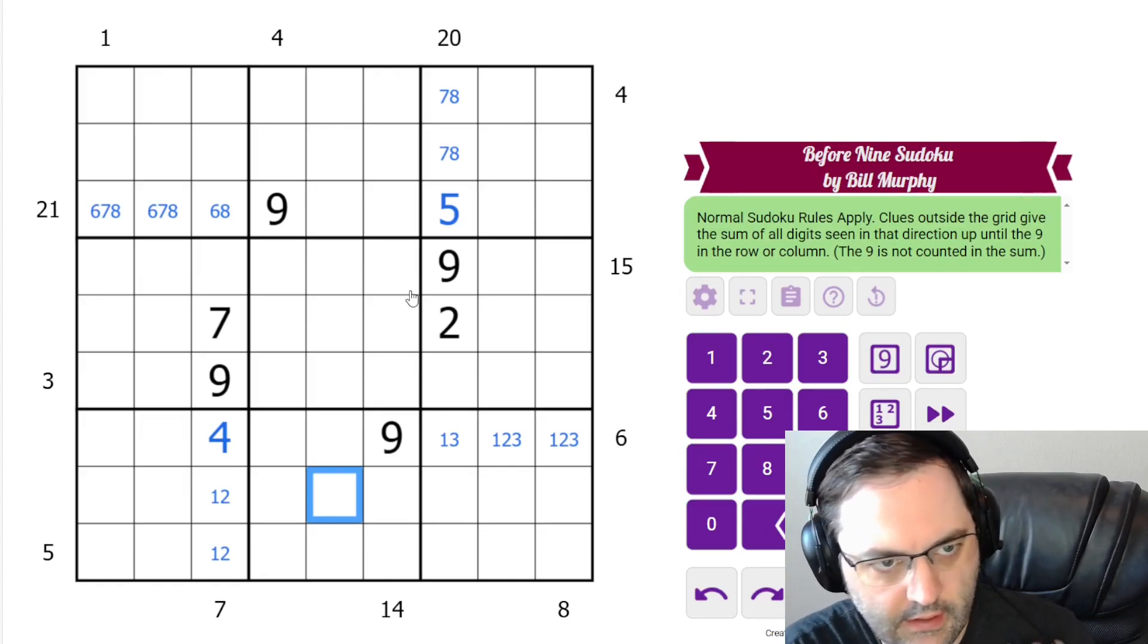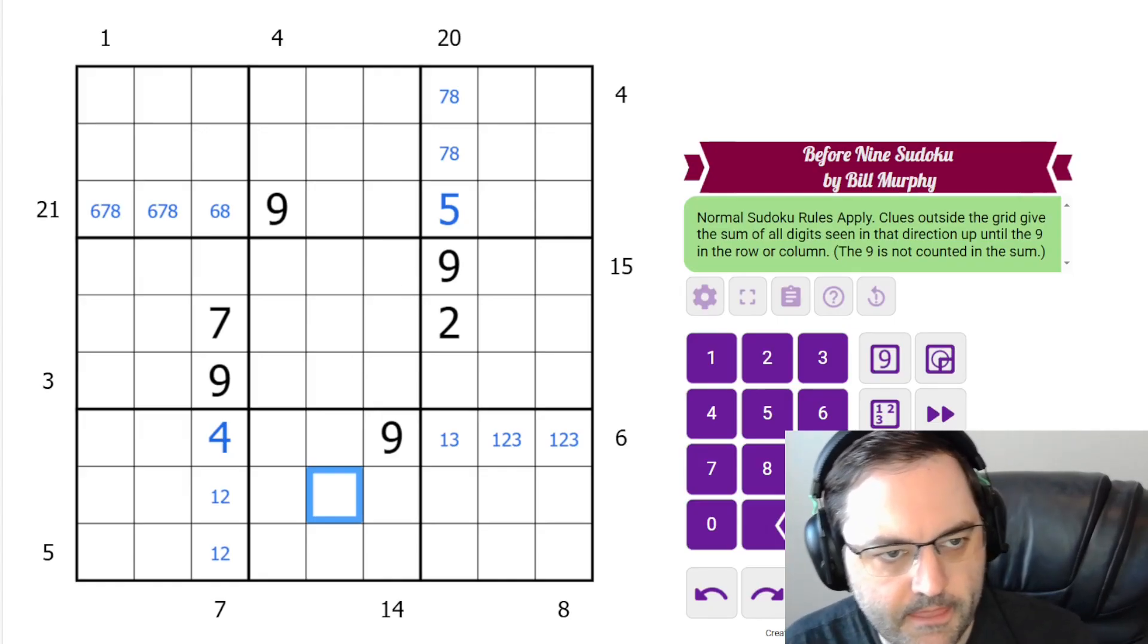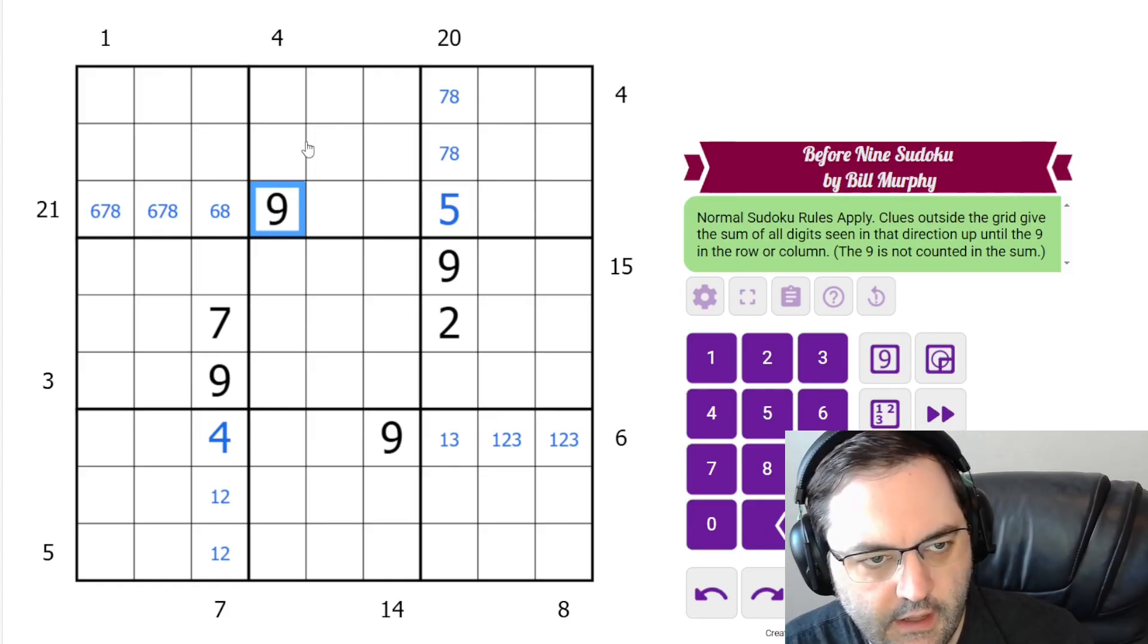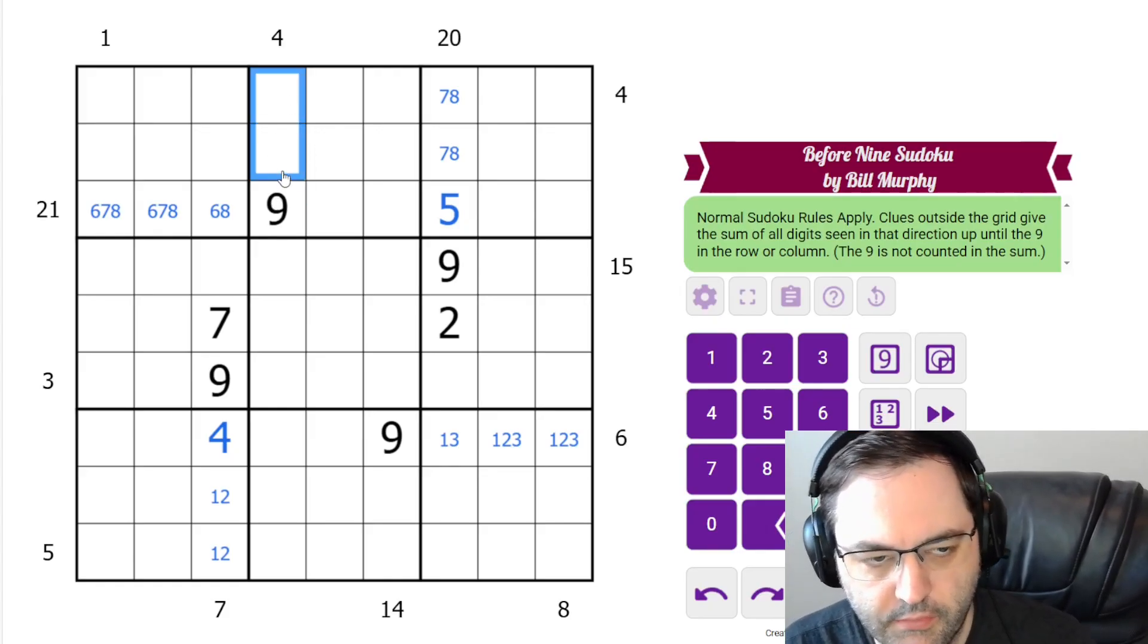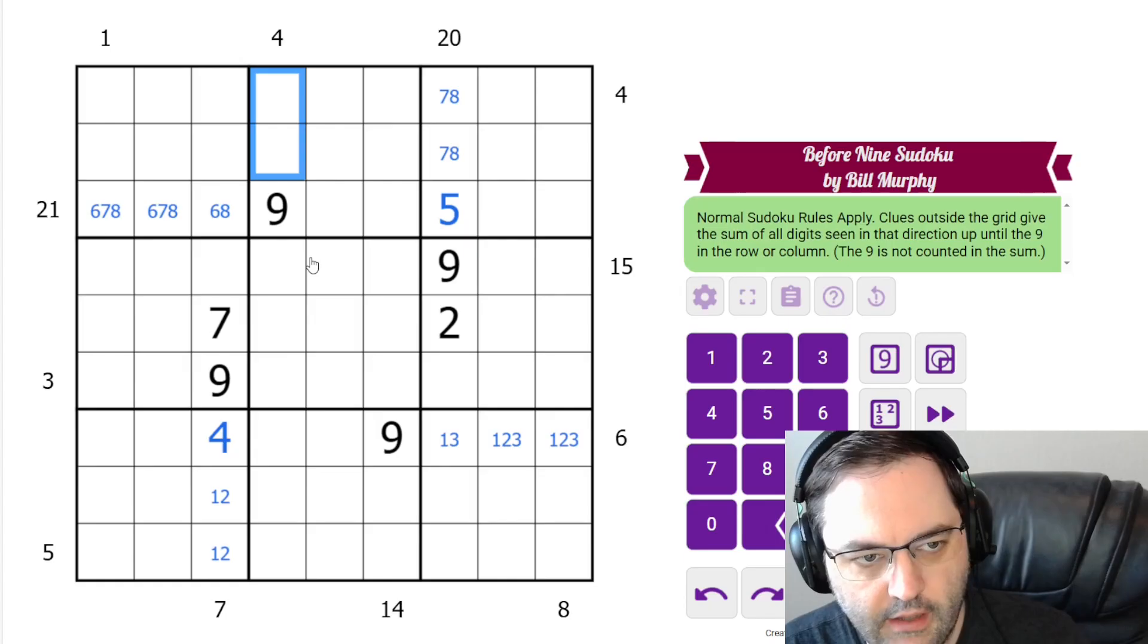All right, let's look at the other clues now. This clue sees a 9 and 2 cells before the 9. The only way to do that and get a sum of 4 is 1, 3.